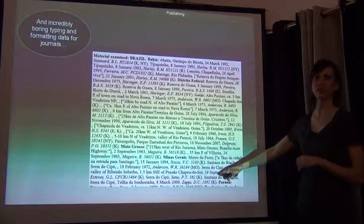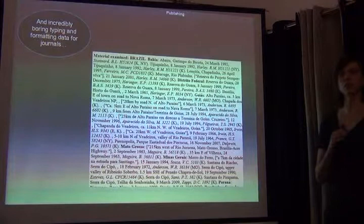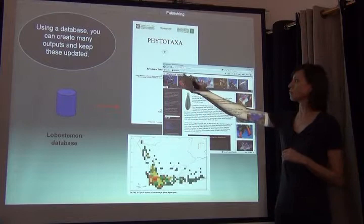Something like this — this is a specimen cited for a species description. To actually just type this out by hand is very complicated and tedious. And if you have this information in a dataset, it would be so much easier to automatically have it exported and formatted as you need for a publication. And this is what BRAHMS does.